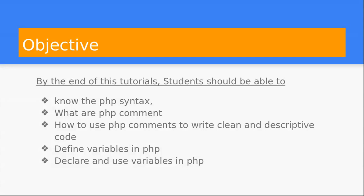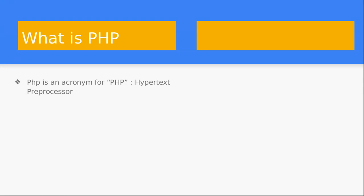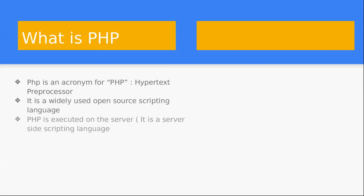We are going to start with what PHP is all about. PHP stands for Hypertext Preprocessor and it is a widely used open source language. PHP is executed on the server, which means it is a server-side language. In other words, PHP is an open source scripting language that is executed on the server. You can use PHP to create, read, and manage files on servers.